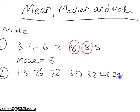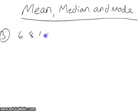In the second set of data, there are two modes, 26 and 32, as they both appear the most times. Sometimes, when each number appears the same amount, there is no mode.